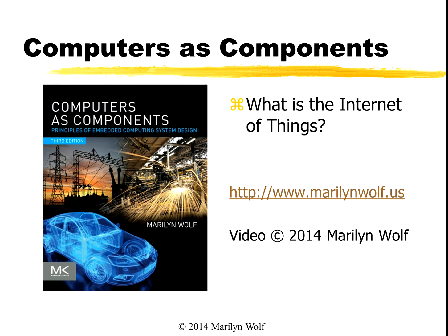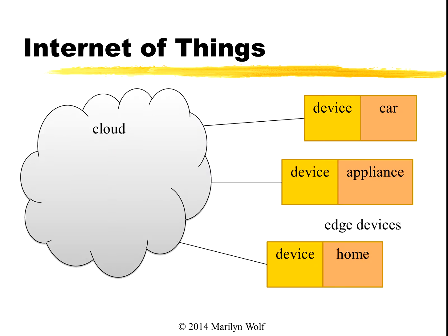Let's talk about the Internet of Things. The Internet of Things combines two different ideas in a powerful way. One is the cloud, that is the internet with computation and storage. The internet provides us with worldwide connectivity, and today we have servers and disk drives that allow us to do massive amounts of computation on massive amounts of data. We combine the power of the cloud with embedded real world visibility and connectivity to the real world.